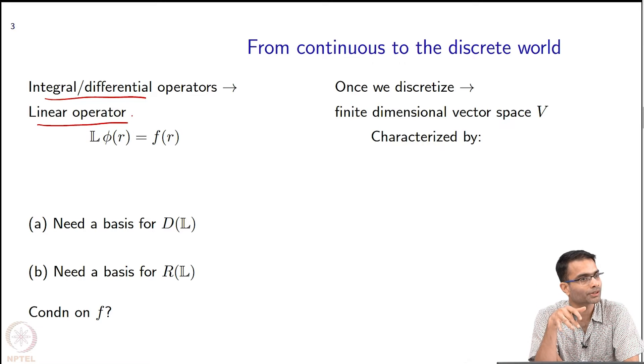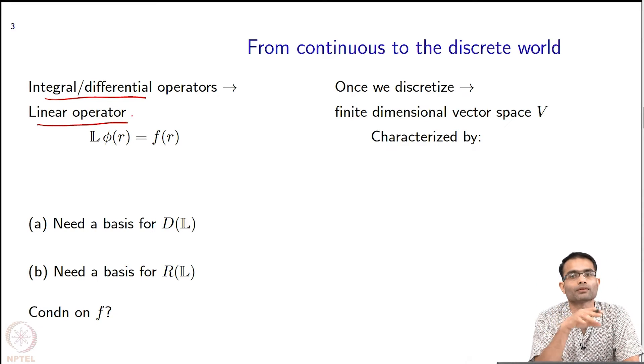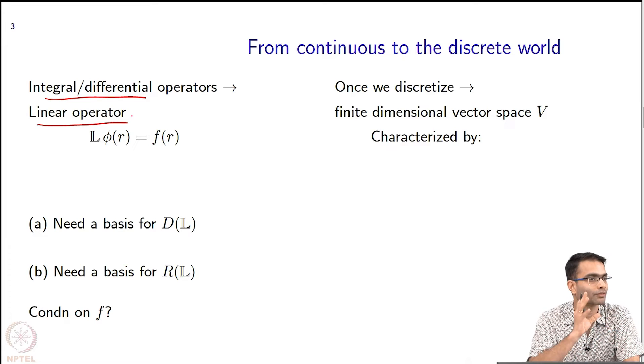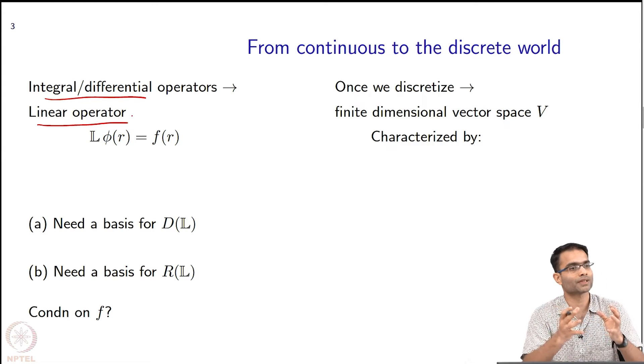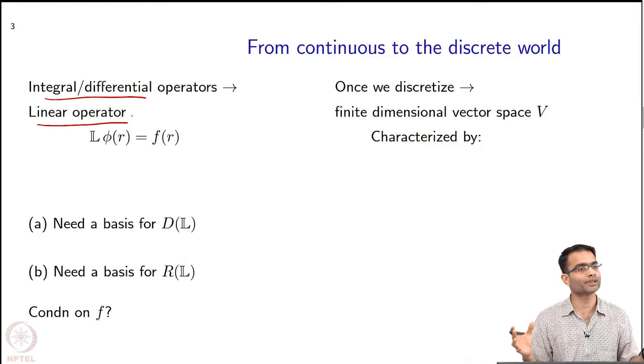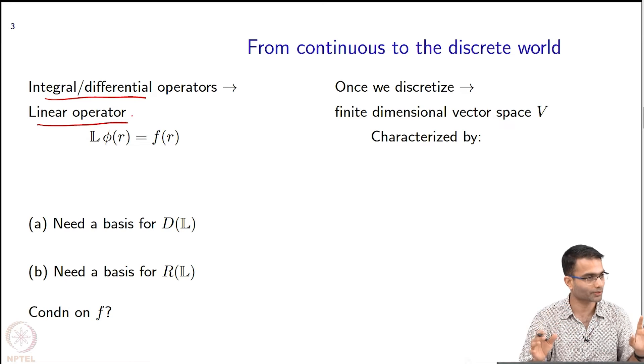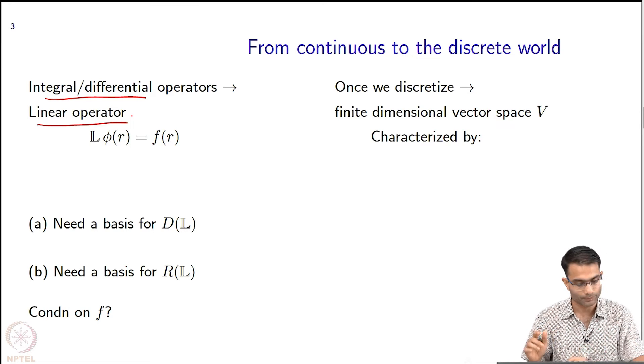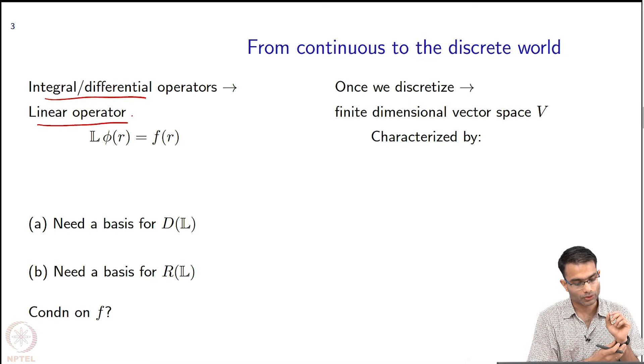The operators that you get in computational electromagnetics are linear operators, and the great relief or saving grace about it is that linear operators we can talk about in the language of linear algebra. So all the tools of linear algebra can be applied to these problems to solve them. That is what really saves us. We could not do this if our operator was not linear.